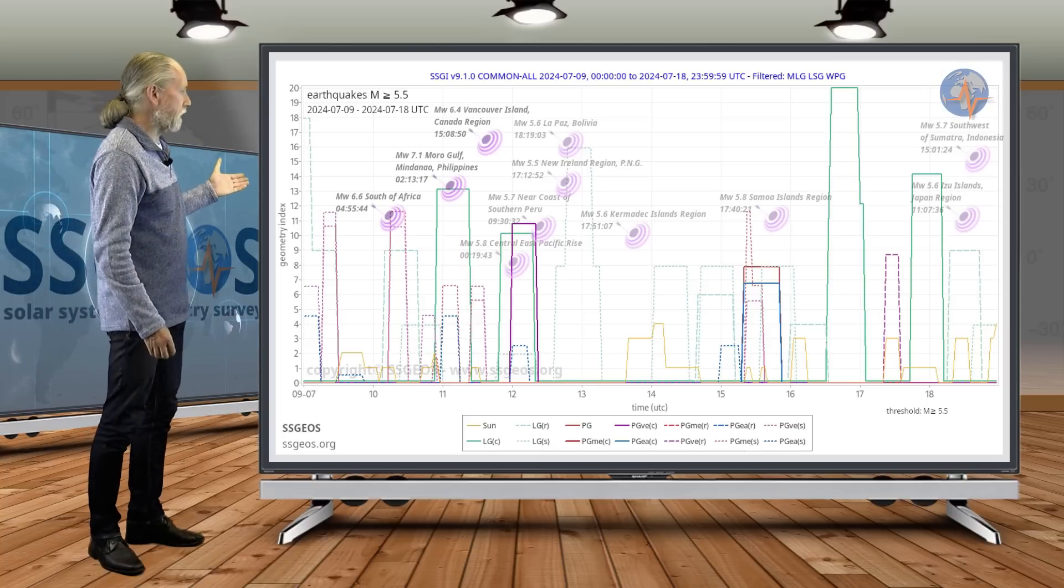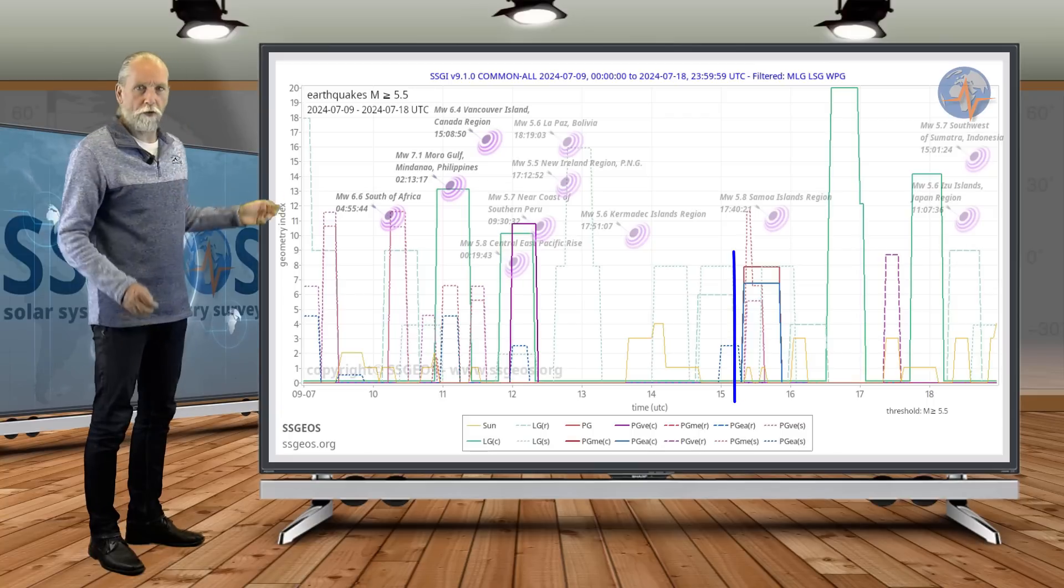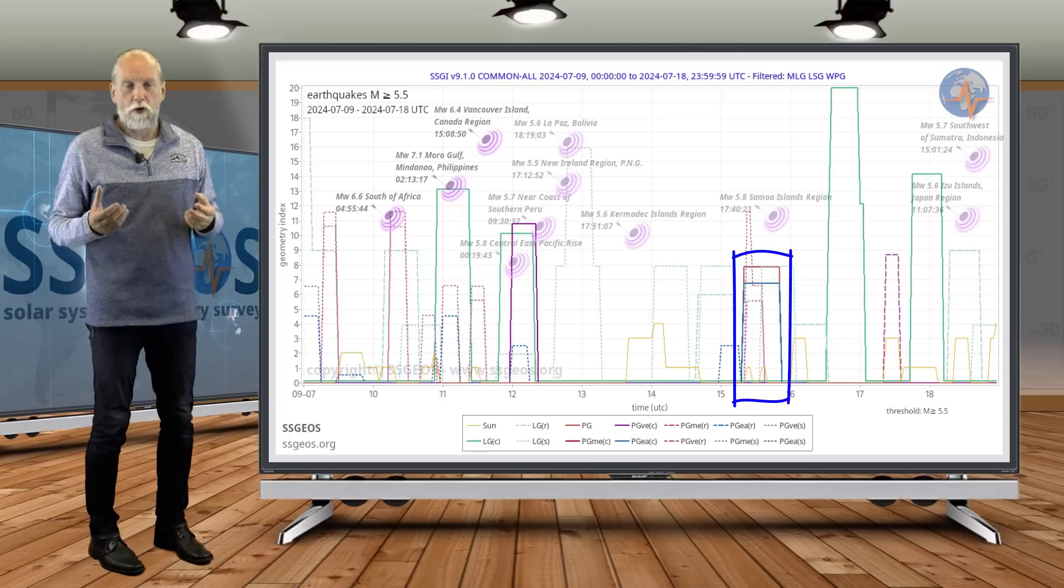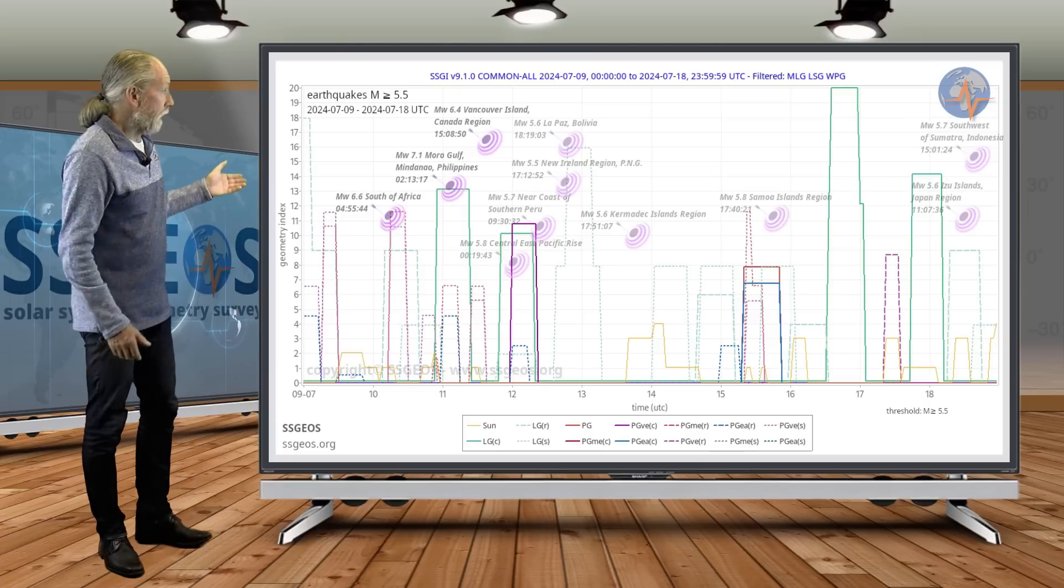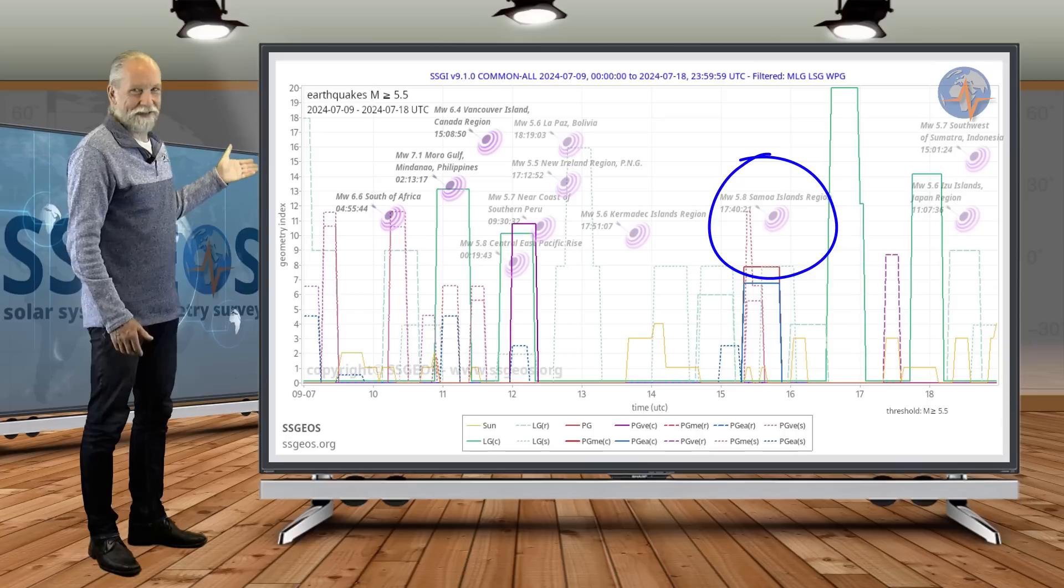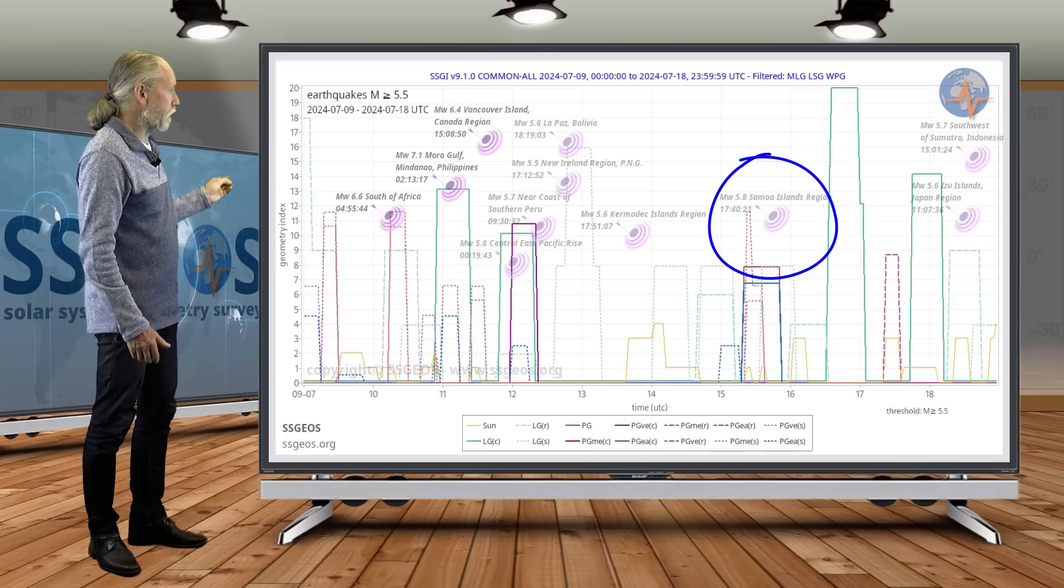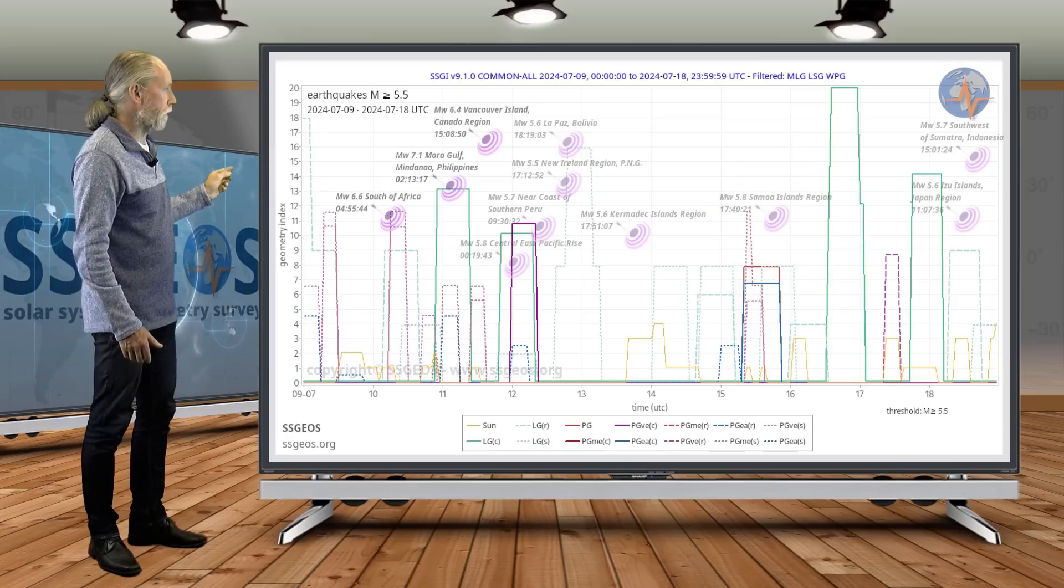Then on the 15th, we had Earth, Mars, and Uranus in a conjunction, and I said that there could be a quick seismic response, possibly mid-six magnitude. It stayed at 5.8, almost at the same time of that planetary conjunction. Obvious seismic response nonetheless.